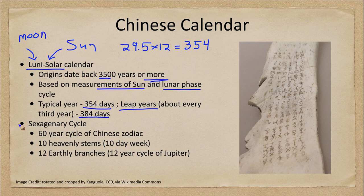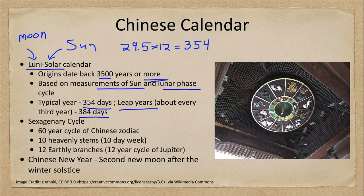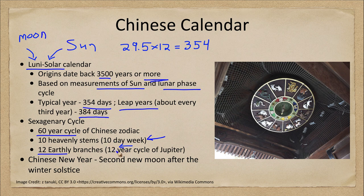The Chinese also had what was called a sexagenary cycle. You may be familiar with this through the Chinese zodiac, which we tend to see as 12 different animals representing different years. But it's actually a 60-year cycle, based on what they called 10 heavenly stems — based on 10 days of the week — and the 12 earthly branches, which was the 12-year cycle of Jupiter. You might think with 10 and 12 you'd get 120, but only half of these combinations are actually used, giving us the 60-year complete cycle.